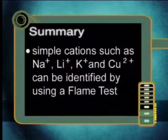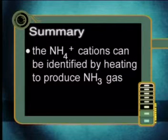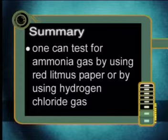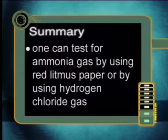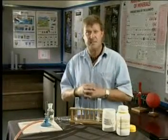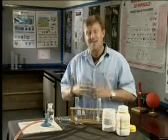Let us now summarize what we have learned in the second part of this lesson. Simple cations such as sodium, lithium, potassium and copper can be identified by using a flame test. The ammonium cation can be identified by heating to produce ammonia gas, and one can test for ammonia gas by using red litmus paper or by using hydrogen chloride gas. I hope you have enjoyed learning about the variety of chemical tests we can use to identify different cations. Until next time, thank you and goodbye.